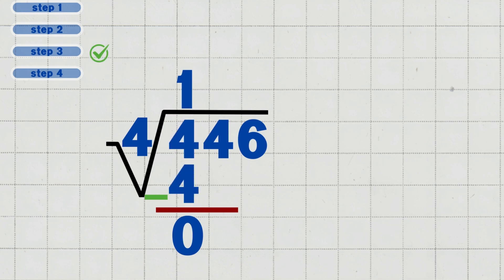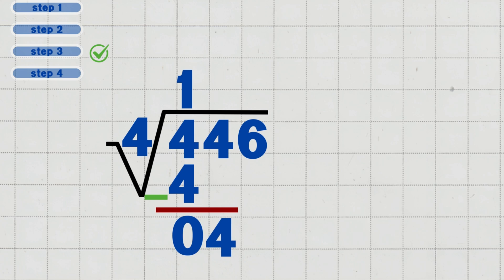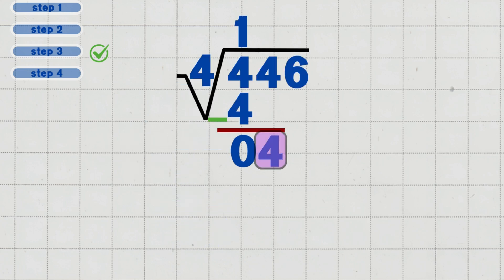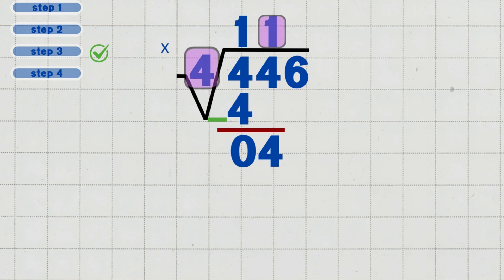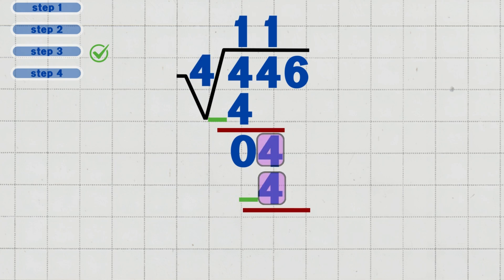Step three: bring down the next digit, four. Bring down the next four from four hundred and forty-six. Now we have four. Four divided by four equals one. Write one above the second four in the quotient. Multiply one times four, which equals four. Subtract four minus four, which equals zero.